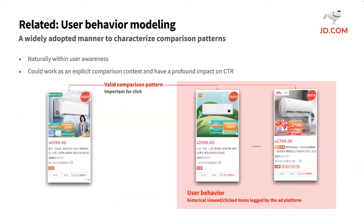User behavior modeling could be seen as a way to capture comparison patterns. The motivation is clearly intuitive. There is a straightforward constructive relationship between the target item and the items that a user has viewed or clicked before, which is naturally within user awareness. As such, the user behavior data could work as an implicit comparison context and have a profound impact on CTR.